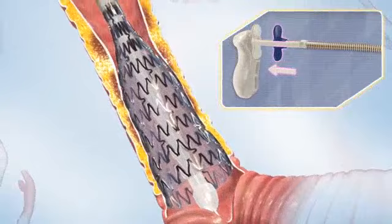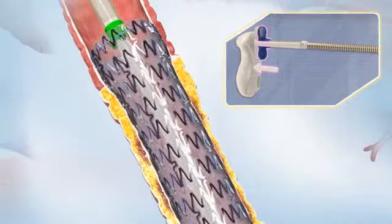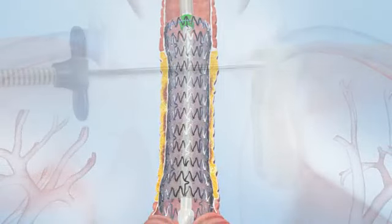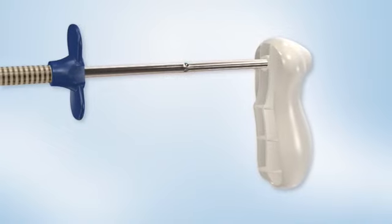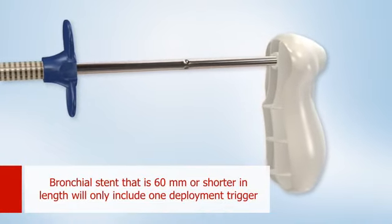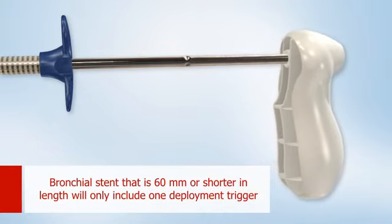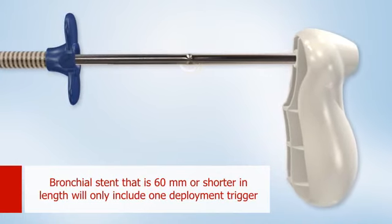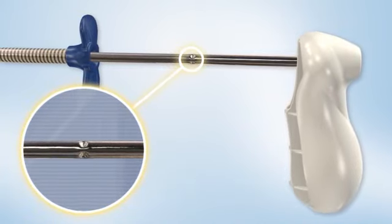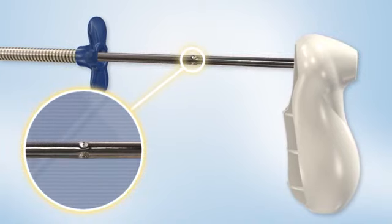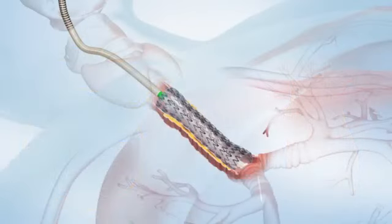Complete actuation of the second blue trigger will release the remainder of the stent body. As compared to longer stent systems, a bronchial stent that is 60 millimeters or shorter in length will only include one deployment trigger. There is a notch in the delivery system that indicates when the deployment is at 50 percent of full expansion.